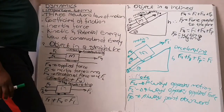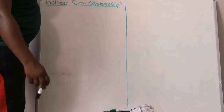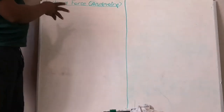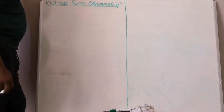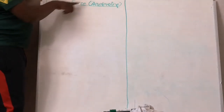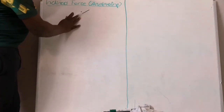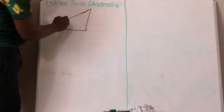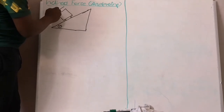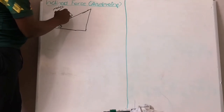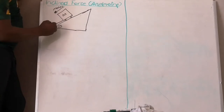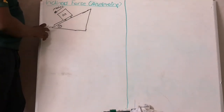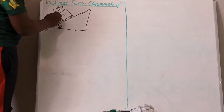Now let's look at how you incorporate kinetic and potential energy. Consider an object on an incline accelerating downward. The force parallel to the plane (FP = Mg sin θ) is always there. The applied force is going downward, friction force opposes the motion (upward), and inertia force opposes the applied force. The equation becomes: FA plus FP equals FF plus FI.